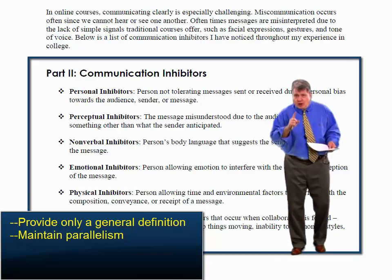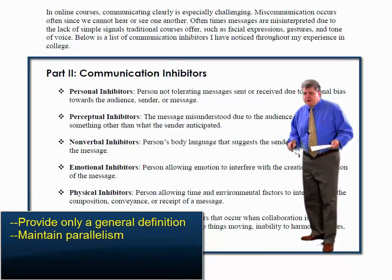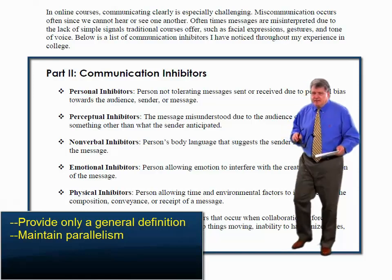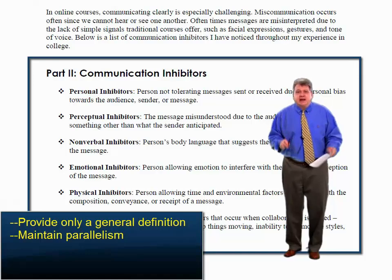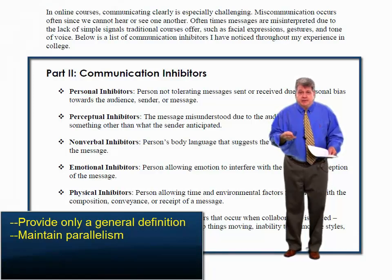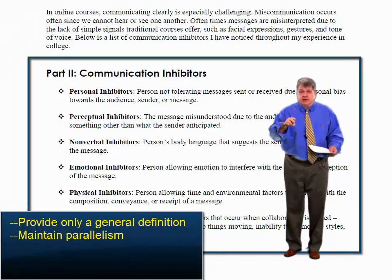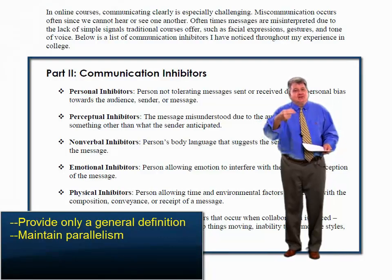The second thing that students often get wrong is parallelism. Things that are parallel to each other must have the same grammatical form. You can't say, 'I love to fish, to ski, and swimming.' You have to say, 'to fish, to ski, to swim.' The things that are parallel to each other have to have the same construction.